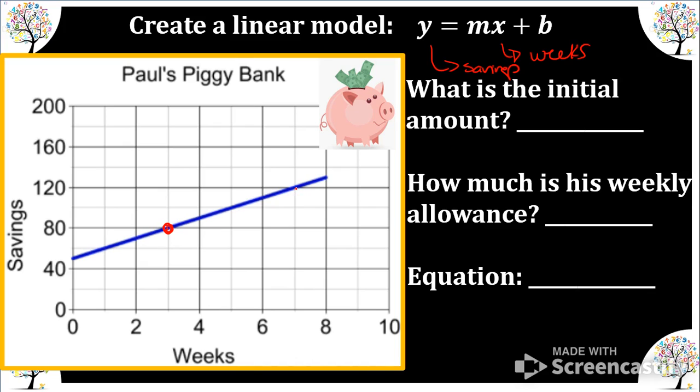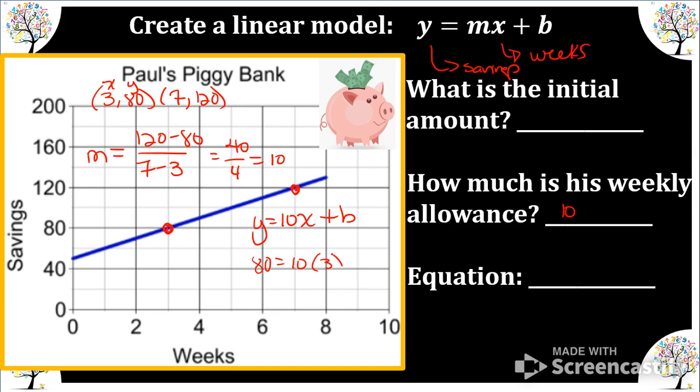So I have me two identifiable ordered pairs. So that is three comma eighty. And we have seven comma one twenty. So our rate of change slope is ten. So he saves ten dollars each week. So I have y equals ten x plus b. I don't know the b value. So we're going to pick one of these points and plug in for x and y. So I'm going to plug in eighty for y. Three for x. And solve for b. Ten times three is thirty. Subtract thirty. And we have isolated b to equal fifty. So he starts with fifty dollars. So we put that all together. So ten dollars each week plus the fifty he starts with.